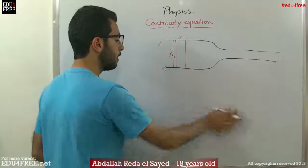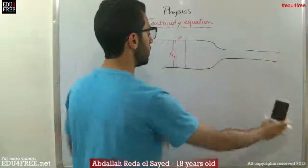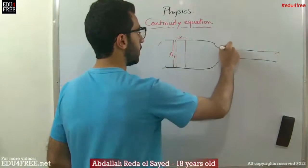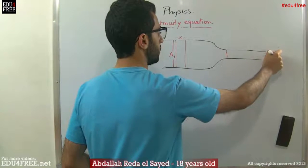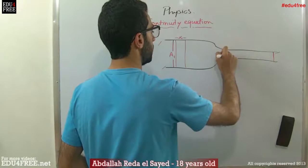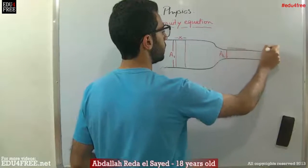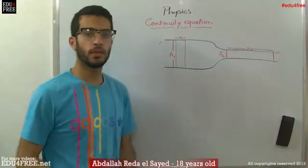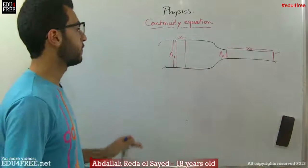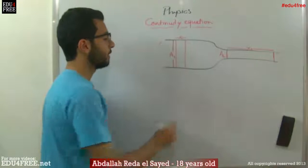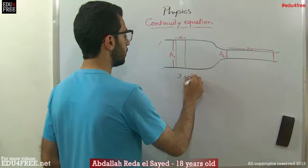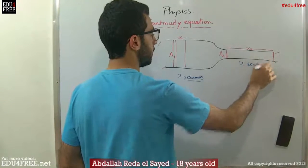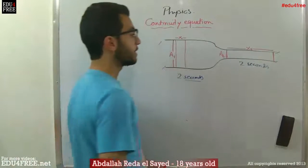When the liquid moves and passes from the wide part of the tube to the narrow part, it will extend. The cross-sectional area decreases and the distance will increase. We are talking relative to a certain point of time. If the liquid takes 2 seconds to cover this area, it also takes 2 seconds to cover this area, and 2 seconds to cover this area.